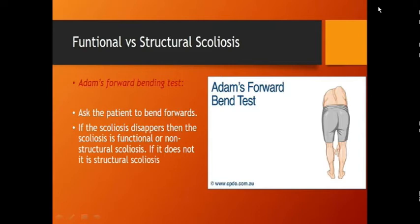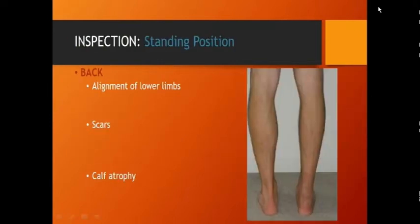From the back also look at alignment of lower limbs, scars, calf atrophy — you can see wasting of the limb. Look at gluteal folds — check if they are symmetrical, as there may be gluteal muscle wasting — and also check for hamstring atrophy.